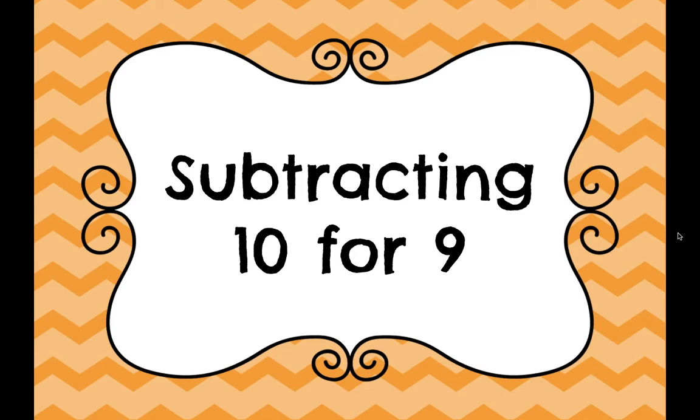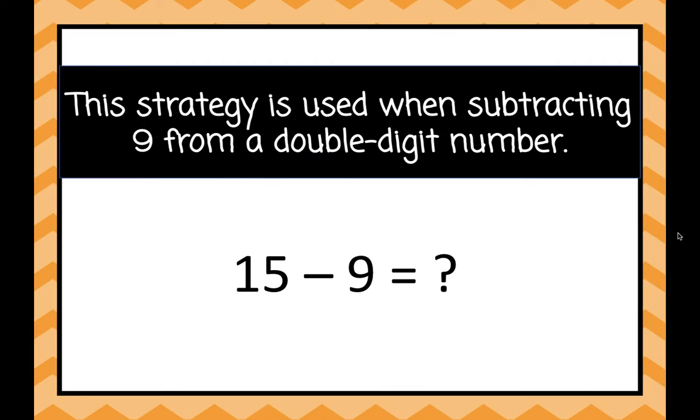Let's look at the subtraction strategy: subtracting 10 for 9. This strategy is used when you're subtracting 9 from a double-digit number. So for example, when we're subtracting 15 minus 9 equals what?